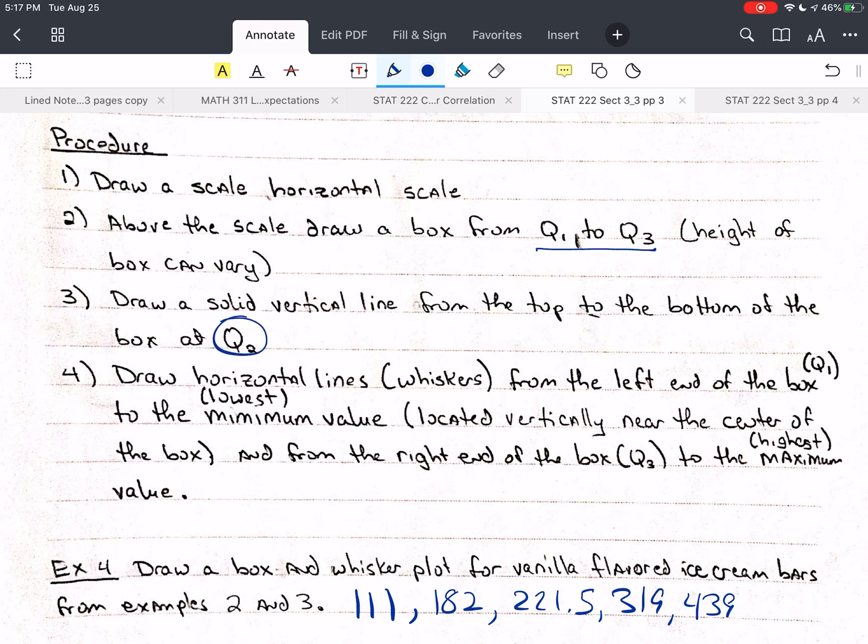Then we're going to draw horizontal lines, or whiskers, from the left end of the box, which is Q1, out to the lowest or minimum value. And we're going to draw those lines near the middle of the box. So if we have a box, we're going to try to draw a line like this. And then we're going to do the same thing from the other side. We're going to go from Q3, the top of the box, up to the maximum value. And again, we're going to place that line vertically in the middle of the box.